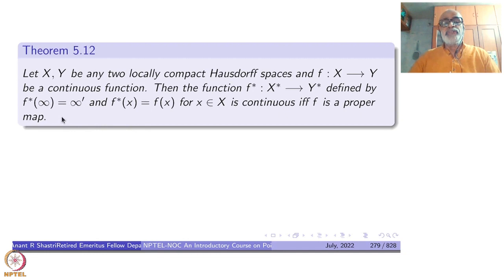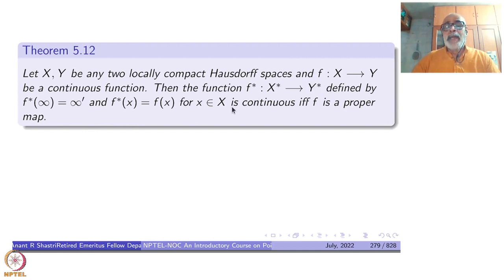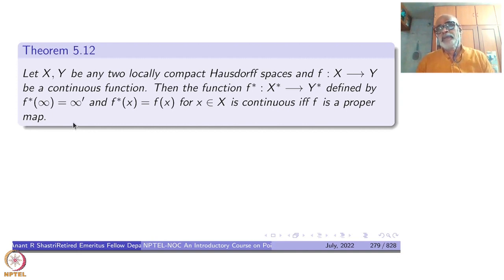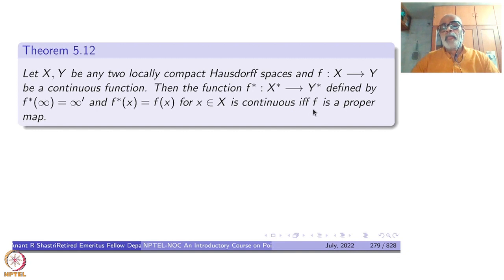And f-star of x equals f of x for all x in X. So f-star is an extension of f that just sends infinity to the corresponding infinity. That function is continuous if and only if f is a proper map. This is the motivation for defining the proper map.